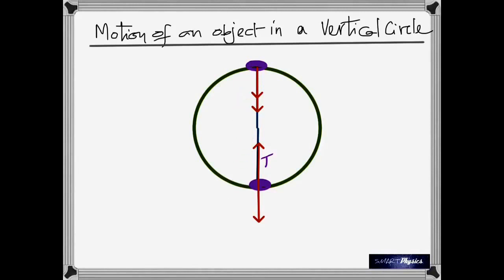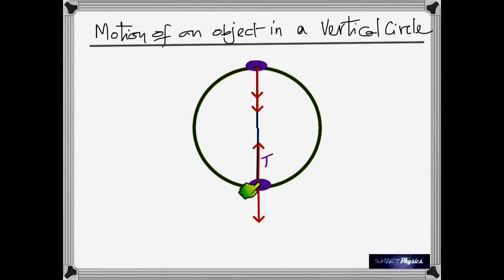At the highest point, both the tension and the weight are toward the center. While at the lowest point, the tension is toward the center but the weight is away from the center. That's the primary difference.